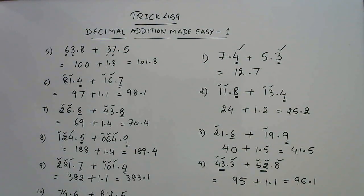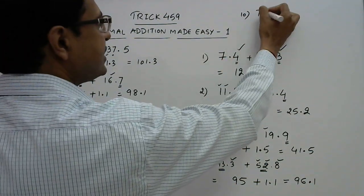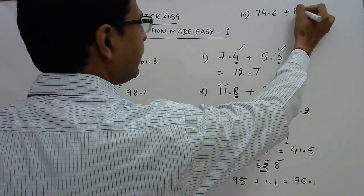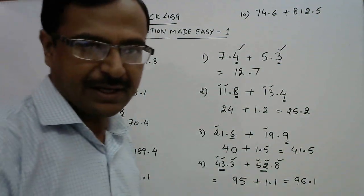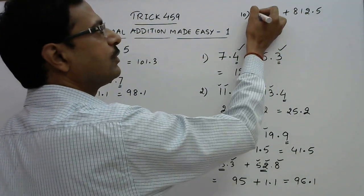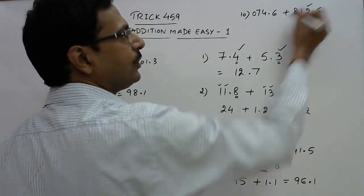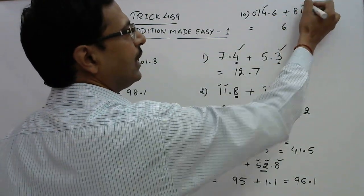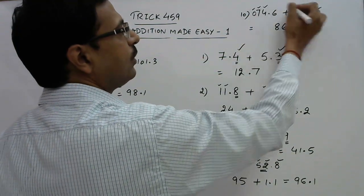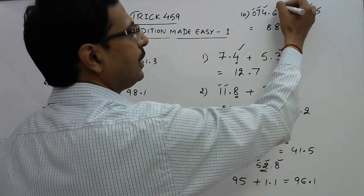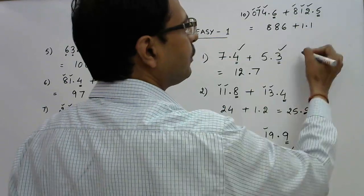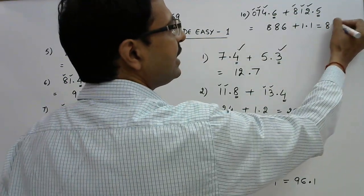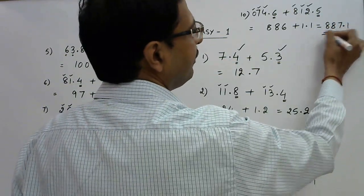Likewise, we have one more question here. This is 74.6 + 812.5. If you have understood the method, you will be able to solve this very easily. See, here we have 3 digits, here we have 2 digits, so we put a 0. Now start adding: 2 + 4 is 6, 1 + 7 is 8, and 0 + 8 is again 8. Now we have 0.6 here and 0.5 here, so 6 + 5 is 11. So we write it as 1.1, and final answer: 886 plus 1 is 887.1 will come as it is.